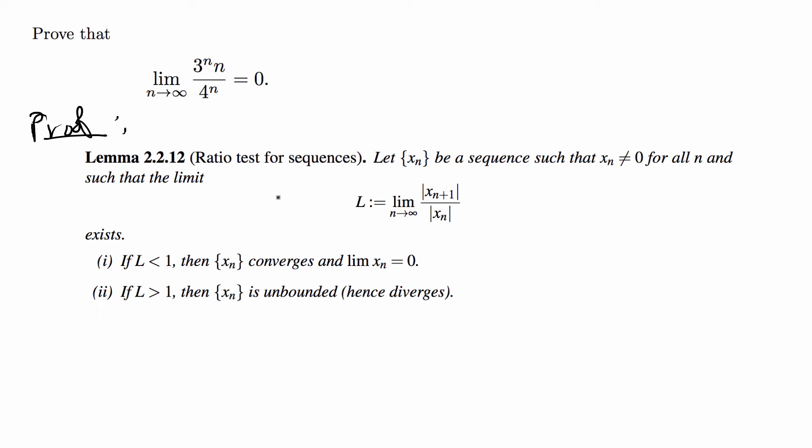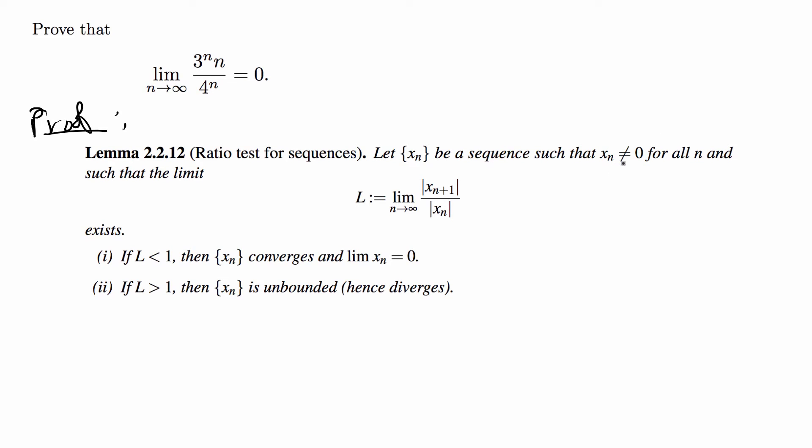So this is the definition of the ratio test for sequences copied straight from my textbook. It says let x_n be a sequence such that x_n does not equal 0 for all n, and this should be n in the naturals by the way, and let there be a limit that exists, that is the limit as n goes to infinity of x_{n+1} over x_n. So you evaluate this and you get L.